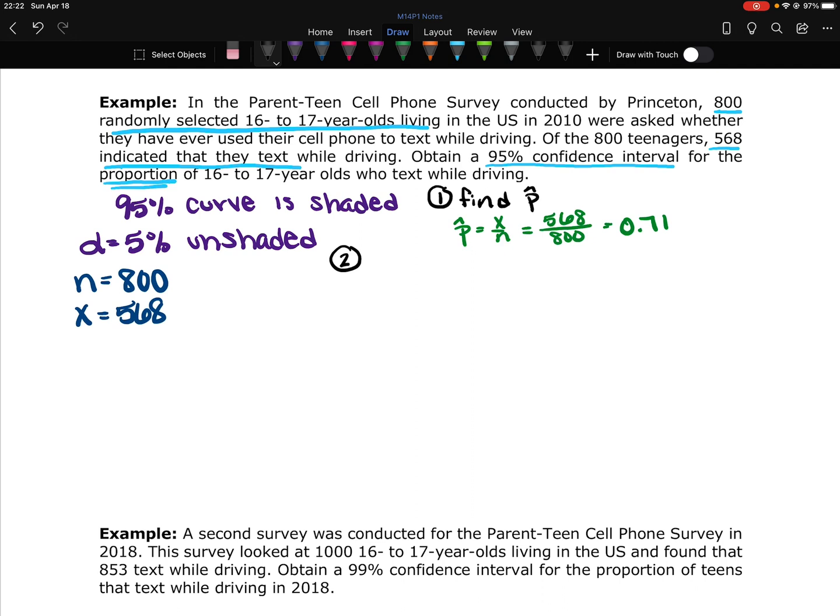P hat is x over n. Our x is 568 and our n is 800. So, 568 over 800 is 0.71. The next thing we're going to do is we are going to find the z score, that z alpha over 2. And that's a z score of alpha over 2, not z times alpha over 2. This is going to be one number. This is a single number that we're going to get from Excel. We're not going to do any multiplying or anything like that.